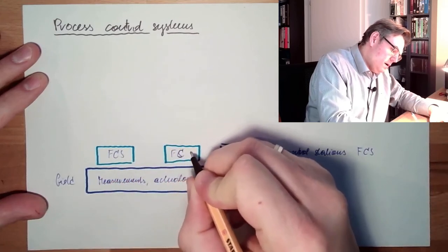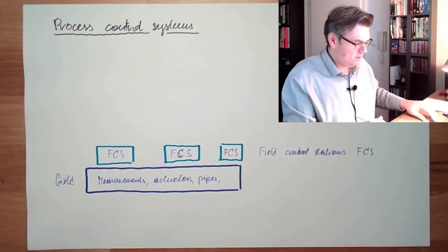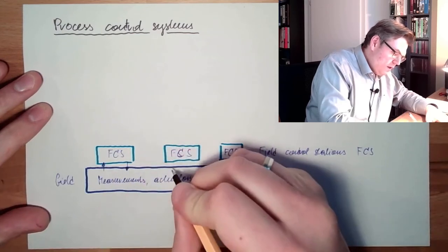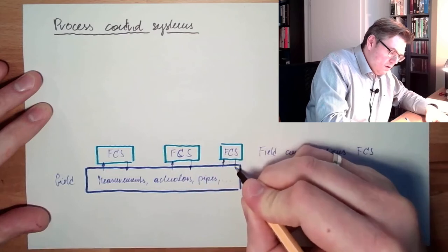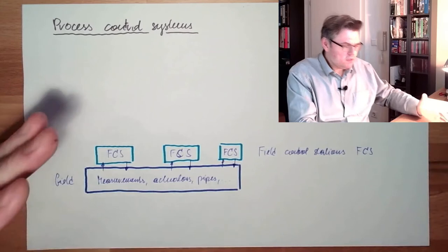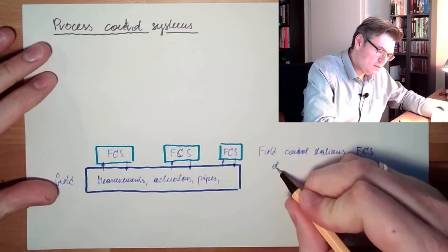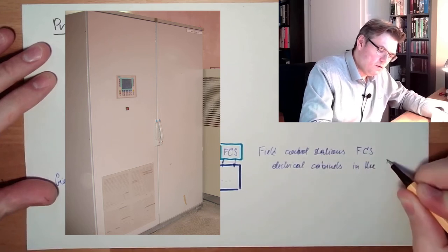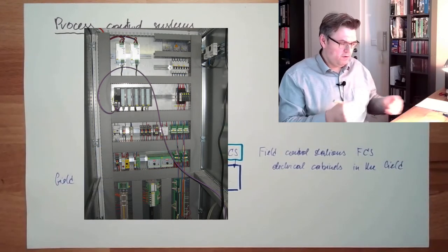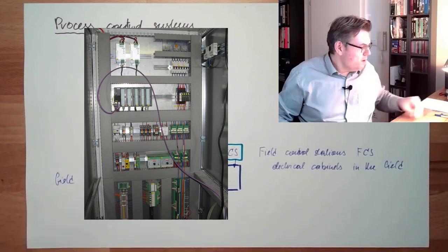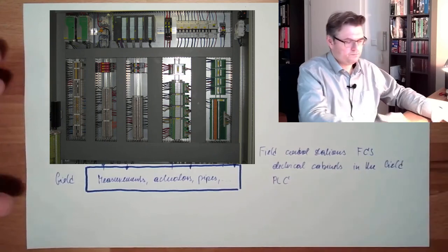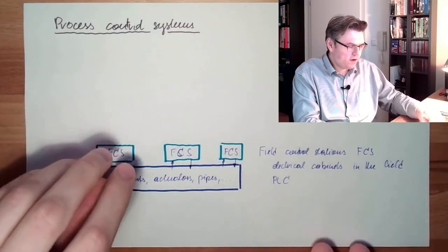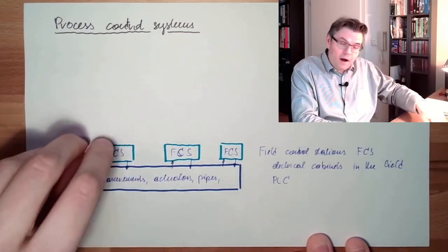In German, this is called Prozessnahe Komponenten, PNK. Each of these field control stations has some measurements and influence. They all have their own tasks in the field at different locations. They are built into electrical cabinets in the field, distributed somewhere. In the field control stations, they are usually PLCs.